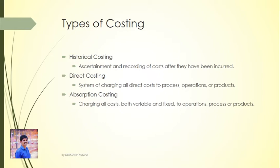Next is Direct costing. It is a system of charging all direct costs to processes, operations, or products, leaving all indirect costs to be written off against the profits in the period in which they arise. Prime cost and variable overheads are used to value the cost of sales.